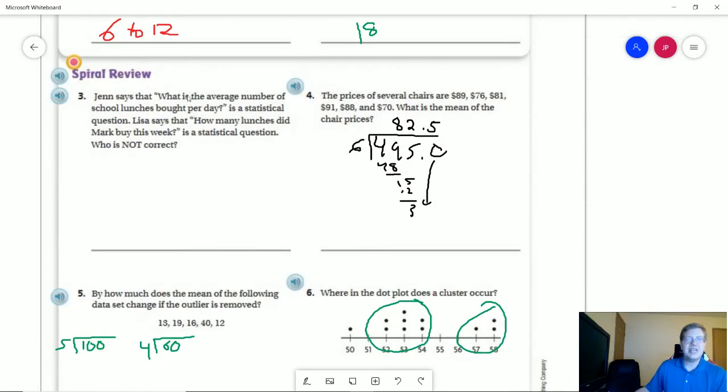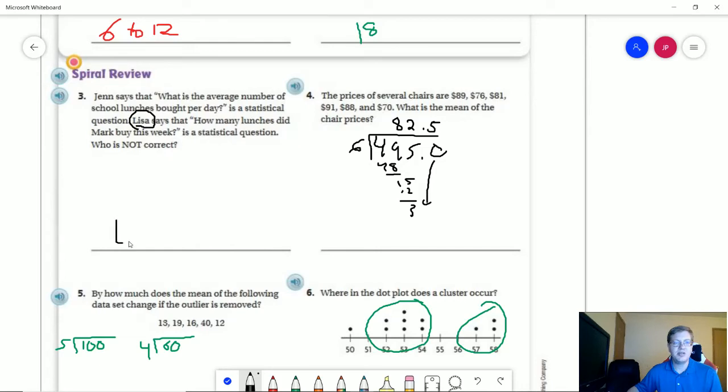Number 3, I gave a suggestion in the lesson video on this one. For it to be a statistical question, it has to involve multiple points of data. Our question, 'how many lunches did Mark buy,' we are asking about different days potentially, but we're only asking about one person. So Lisa would be the person that is not correct in this instance. Jen saying the average number of school lunches bought each day involves multiple points of data.